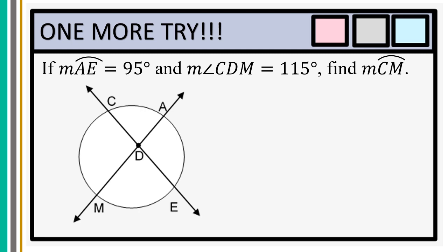Let us have another example. The measure of arc AE is 95 degrees, and the interior angle CDM is given as 115 degrees. This time we are supposed to find the measure of arc CM — one intercepted arc — since the interior angle is already given. We apply the general formula: measure of angle CDM equals one-half the sum of arc AE and arc CM.